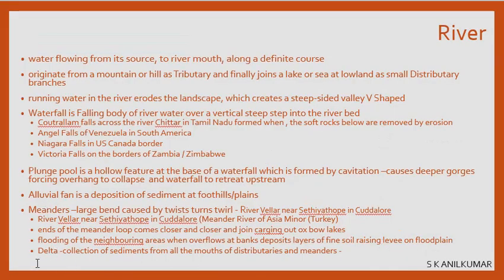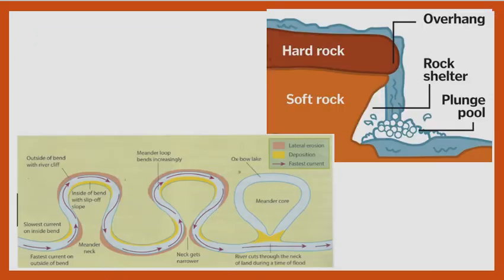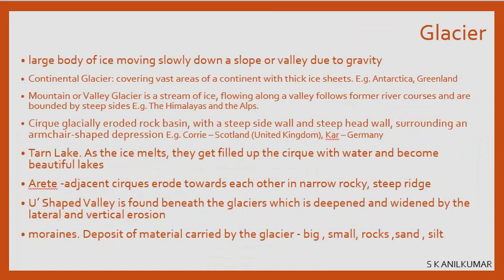Glaciers are large bodies of ice moving slowly down a slope or valley due to gravity. A continental glacier covers vast areas of a continent — for example, Antarctica and Greenland. A mountain or valley glacier is a stream of ice that flows from a mountain, slowly moving along a valley. While a river flowing through a valley forms a V-shaped valley, a glacier flowing through a valley creates a U-shaped valley.